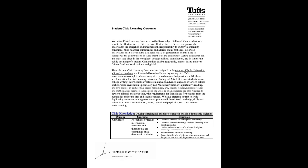So we can see civic knowledge here — that is recognizing or recalling information, concepts, and theories that are essential to building democratic society. The specific examples that Tufts gives us: describe theories and concepts of community; describe democratic change theories including asset-based approaches; understand contributions of academic discipline knowledge to democratic societies; know theories of ethical reasoning; recognize the role of citizens, government, NGOs, and the private sector in building democratic societies.